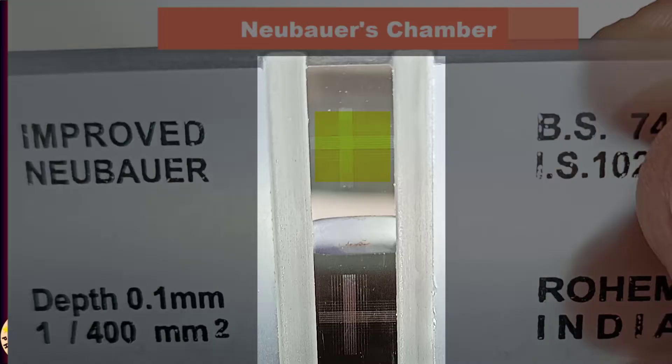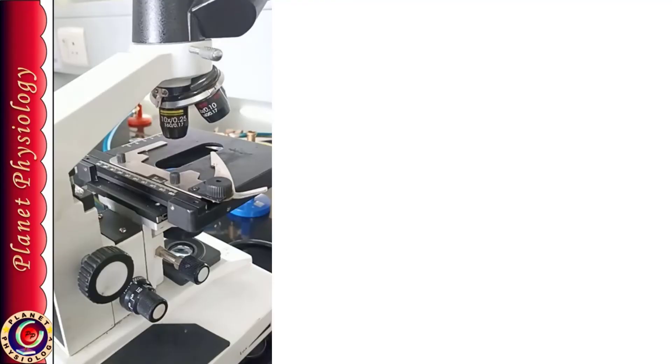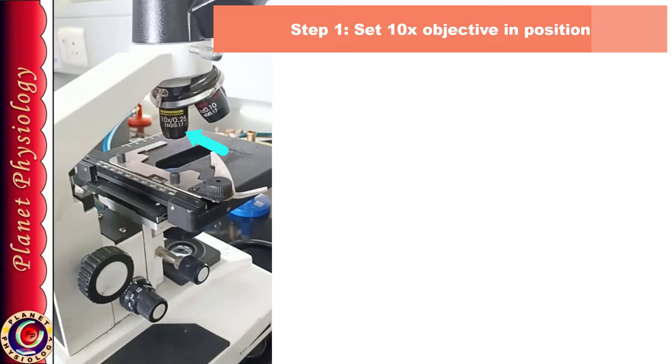So the very first step is, make sure that your microscope has low power objective lens in position. This is very important and many times students don't pay attention to this part. So before you begin, make sure that you are using low power, i.e. 10x objective.